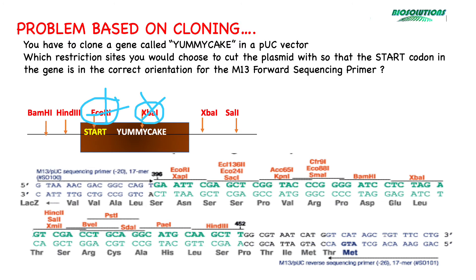Next, in the PUC vector MCS, we find BAMH1 restriction site is present in both the GOI and the vector and is located outside of the coding region. We also have to keep in mind that the start codon in this GOI should be aligned with the M13PUC sequencing primer binding location.